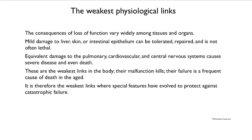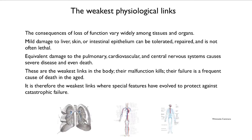It's the weakest links where special features have evolved to protect against catastrophic failure. There is a diagram of the lung, of the cardiovascular system, and of the central nervous system — that is where we expect to see evolution to have generated protective mechanisms.